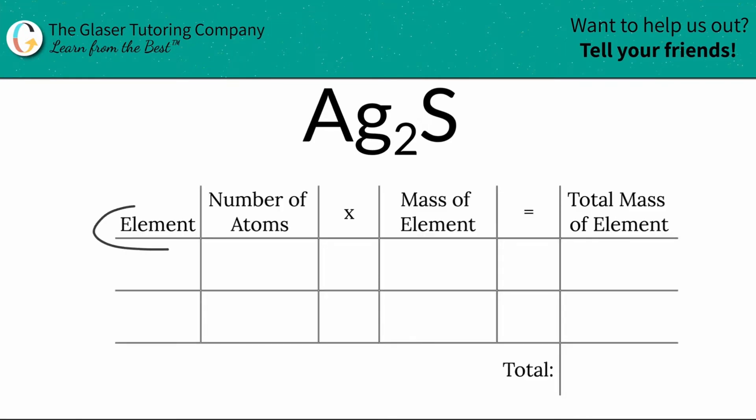The first thing I need to do is fill in the elements that I see in my formula. I see silver, so I'm going to write down silver. I also see sulfur, so I'm going to write down sulfur.